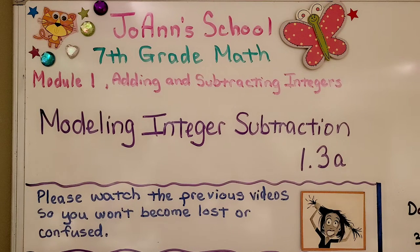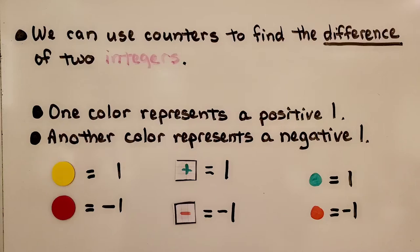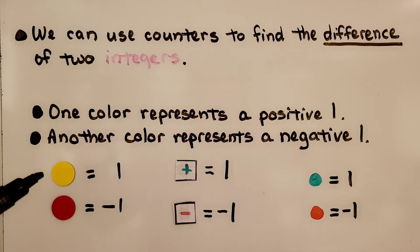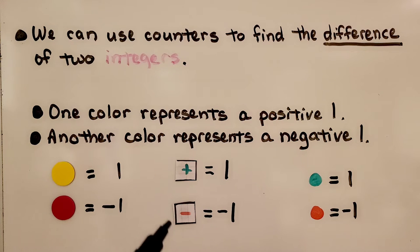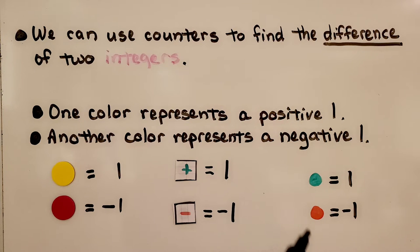Modeling integer subtraction, lesson 1.3a. We can use counters to find the difference of two integers. One color represents a positive and one color represents negative. We can make our own counters by using a plus sign for positive and a minus sign for negative, or we can just draw our counters for a positive and a negative.